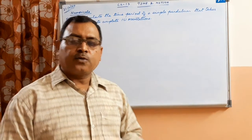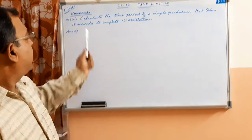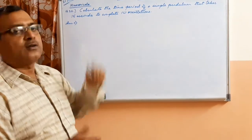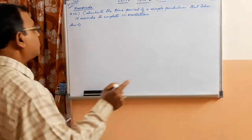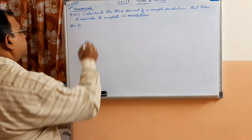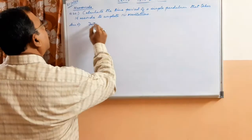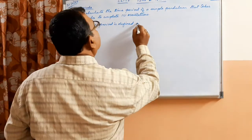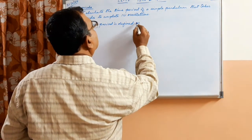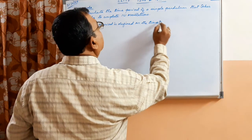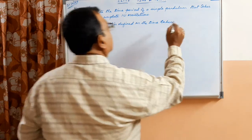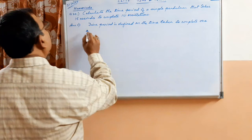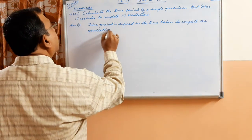Welcome back children, so here is the next numerical: calculate the time period of a simple pendulum that takes 15 seconds to complete 10 oscillations. Now I want you to write the definition of time period first. Time period is defined as the time taken to complete one oscillation.